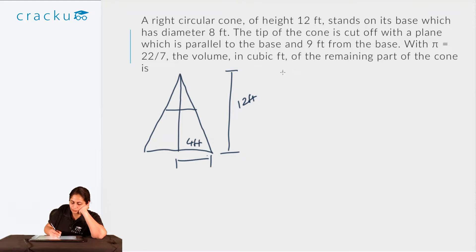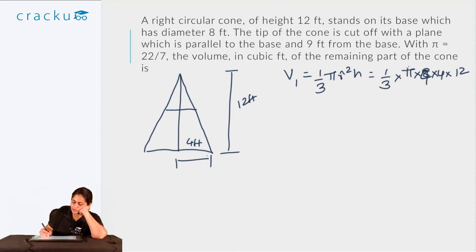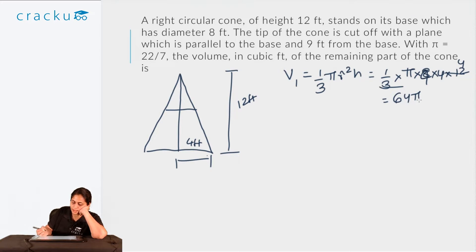The volume of the uncut cone is V₁ = (1/3)πr²h = (1/3) × π × 4² × 12 = (1/3) × π × 16 × 12. So this is (1/3) × π × 192 = 64π. This is the volume of the uncut cone.